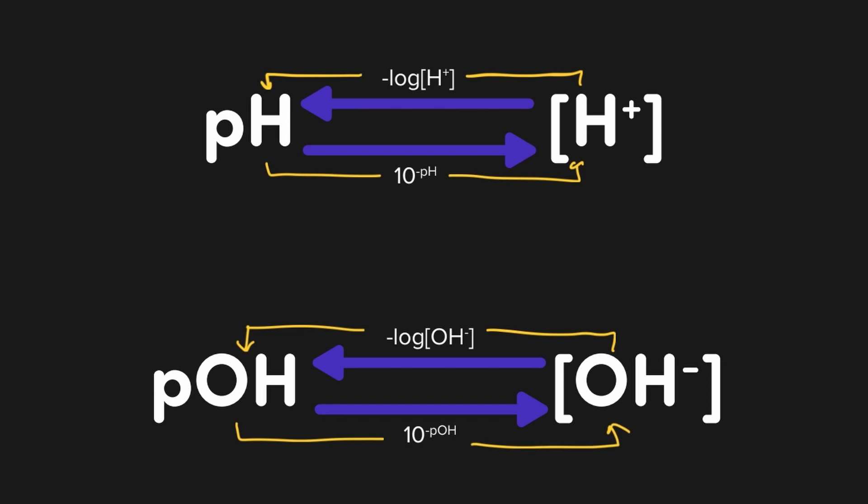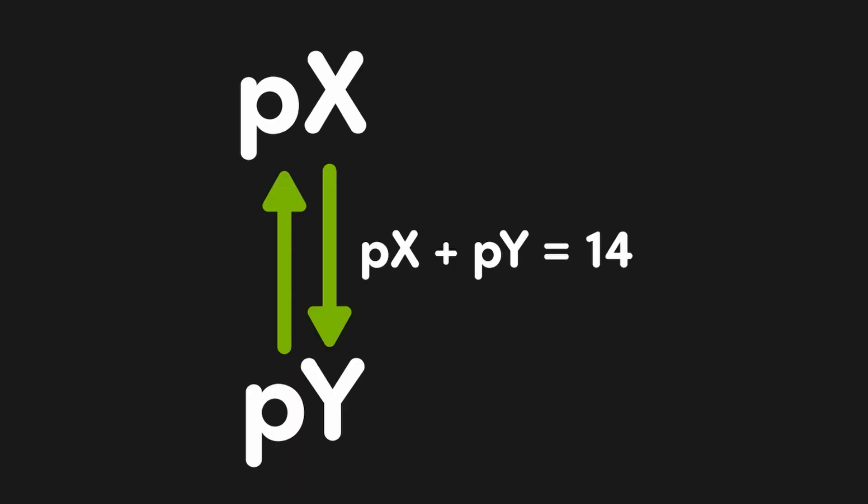And we can carry this over to Ka, Kb, pKa, and pKb as well. Now let's look at how we convert between two p-values. When we add up two p-values together, they must equal 14. We can generalize this as px + py = 14.